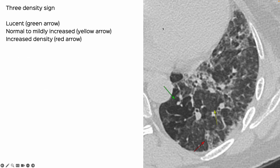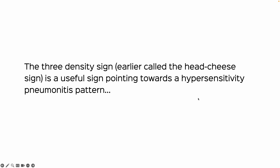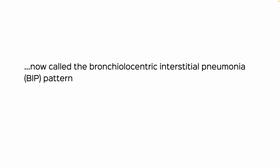We can see the three density sign here: there are lucent areas, this is slightly increased density — the earlier idea was to call this normal lung, but you could say it's just slightly increased density — and then this is more increased density. So that is the three density sign, which was earlier called the head cheese sign, and is a useful sign pointing towards a hypersensitivity pneumonitis pattern, now called the bronchiolocentric interstitial pneumonia, or the BIP pattern.